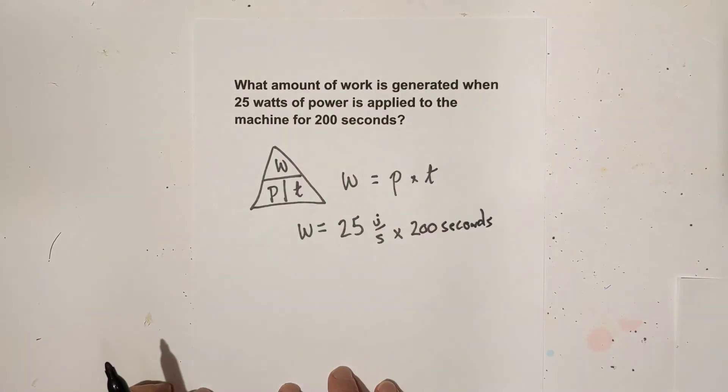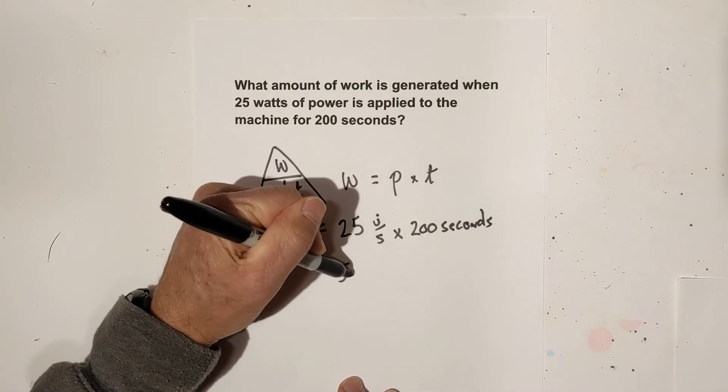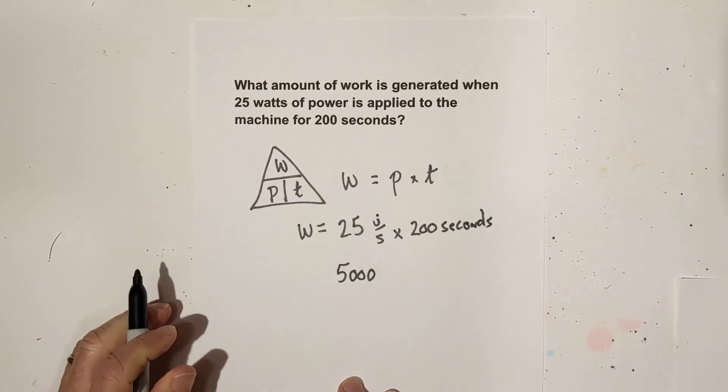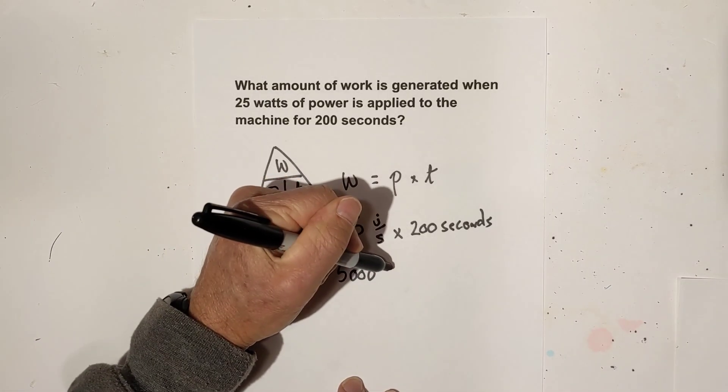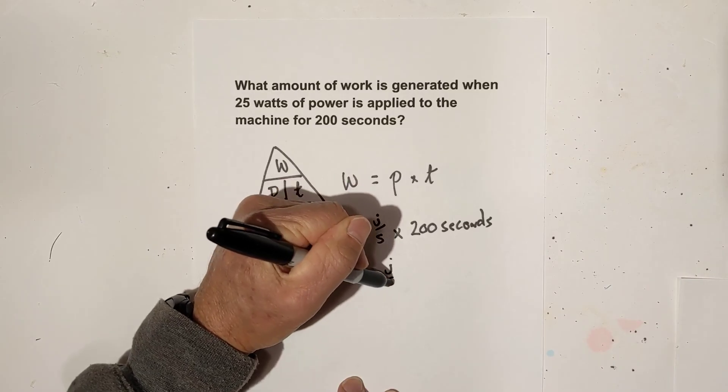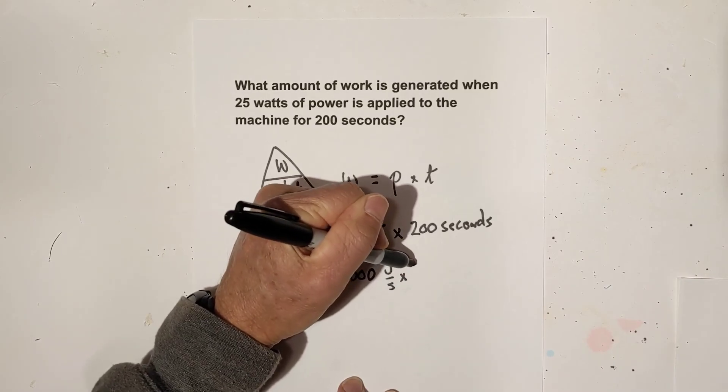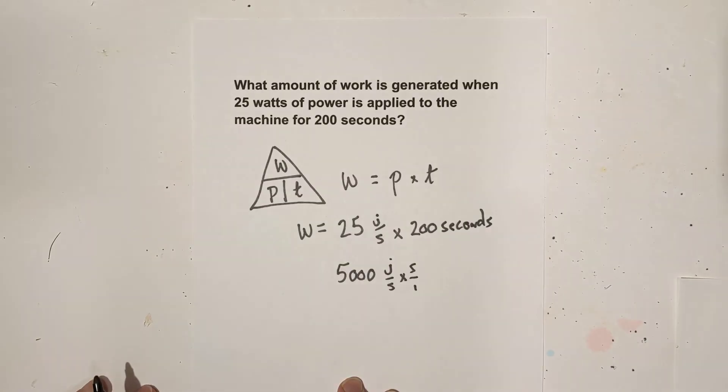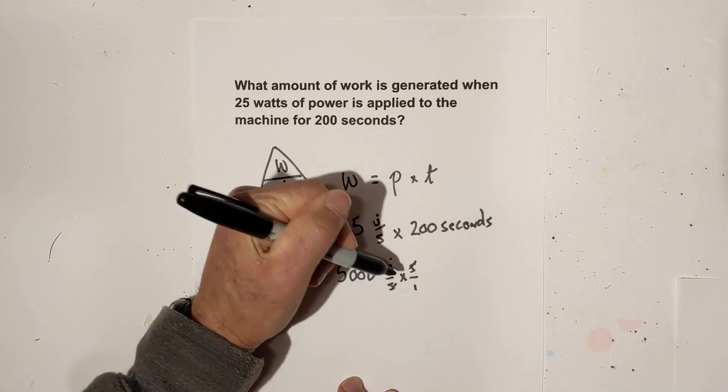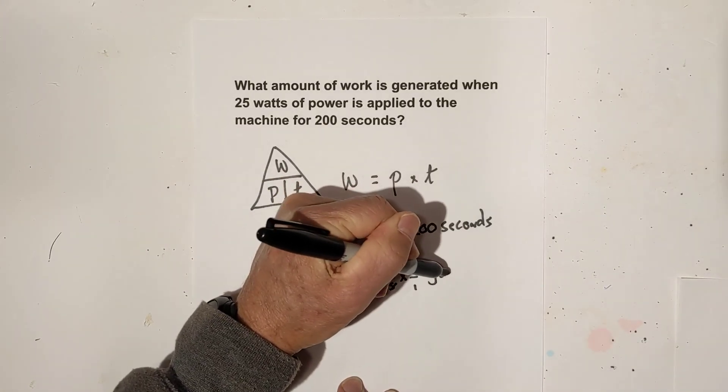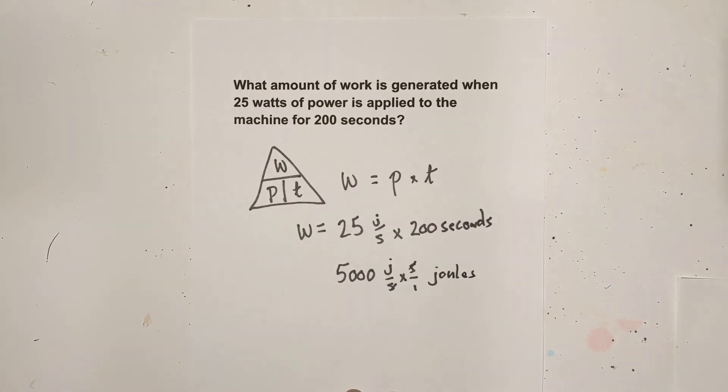So now when we multiply this, 25 times 200 seconds is 5,000. And let's see what we have with our units. We have joules over second times seconds, and I'm going to place it over 1. These cancel and you're left with joules.